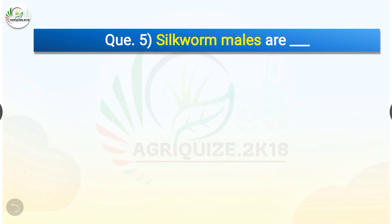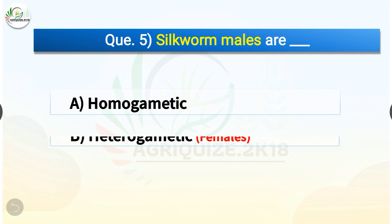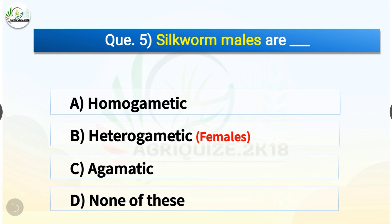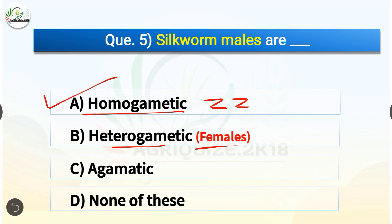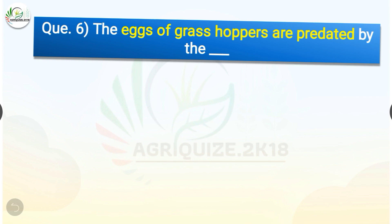Question number five: Silkworm males are which of the following? The options are: homogametic, heterogametic, agametic, or none of these. The correct answer is option A — homogametic. Silkworm males are homogametic, whereas females are heterogametic. In silkworm Bombyx mori, females are heterogametic (ZW) while males are homogametic (ZZ).